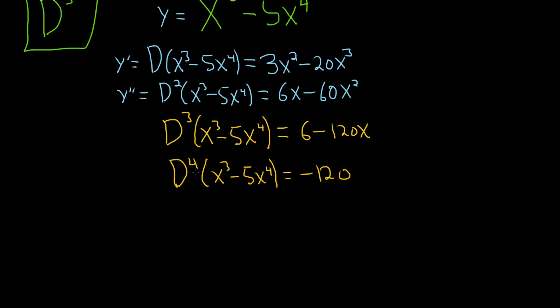One more time and we got it. D to the 5 applied to x cubed minus 5x to the fourth. And the derivative of a constant is 0. So this means, this equation means, that D to the 5 annihilates this function. I hope this video has been helpful.